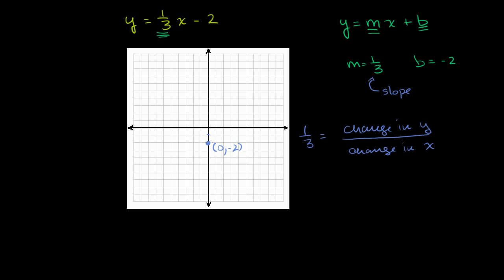So let me graph that. We know that this point is on the graph, that's the y-intercept. The slope tells us that if x changes by 3, so let me go 3 to the right, 1, 2, 3, that y will change by 1. So this must also be a point on the graph. And we could keep doing that.